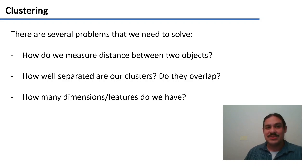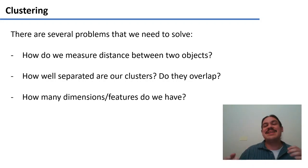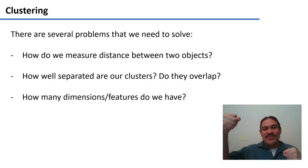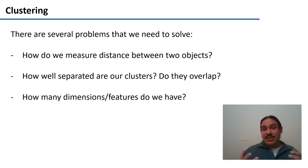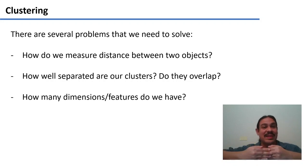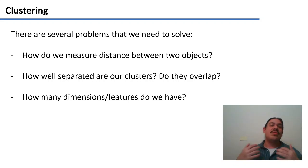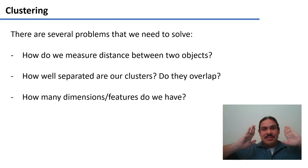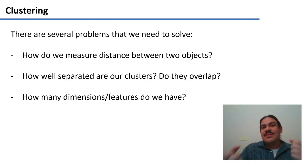In order for the computer to perform clustering we need to solve several problems. The most obvious one is how it's going to measure distance — how it's going to know if two things are close together or very far apart. We're going to need to implement some measure of distance. We'll also have to figure out if our clusters are well separated or if they're going to overlap and the edges are going to be a little blurry. We also need to think about how many dimensions or features we're going to have.